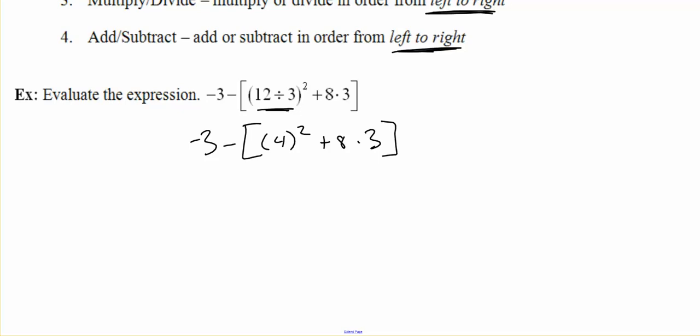Now we have exponents inside our bracket, so 4 squared is 16. Negative 3 minus 16 plus 8 times 3. Inside our bracket, 8 times 3 is 24. Negative 3 minus 16 plus 24. We can evaluate 16 plus 24, which is 40. So negative 3 minus 40, and negative 3 minus 40 is negative 43.